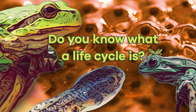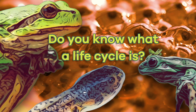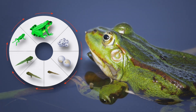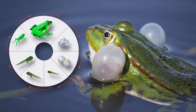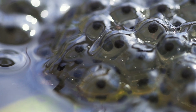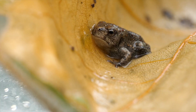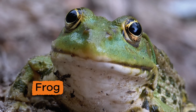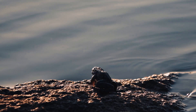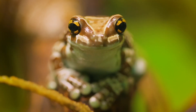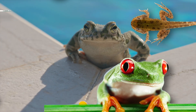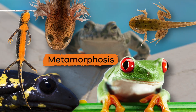Do you know what a life cycle is? A life cycle is a series of stages that a living thing goes through during its life. Today we are going to talk about the life cycle of one specific creature: the frog. Ready to learn more? Let's get started. But first, here's some background information.